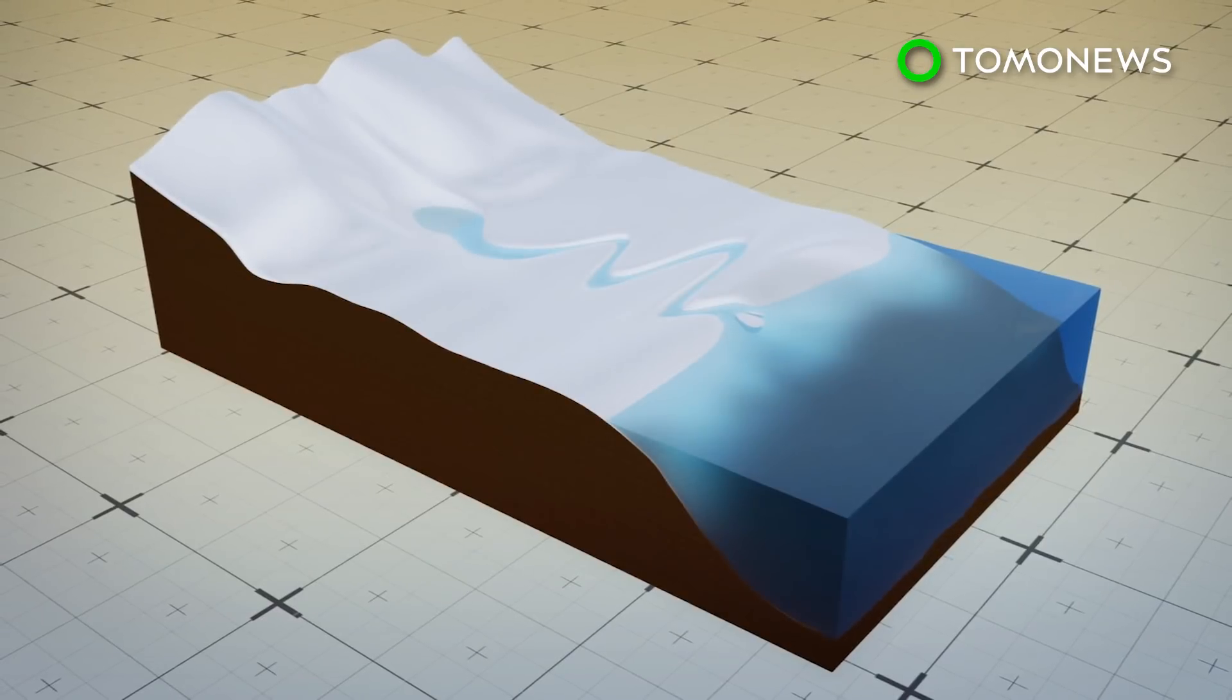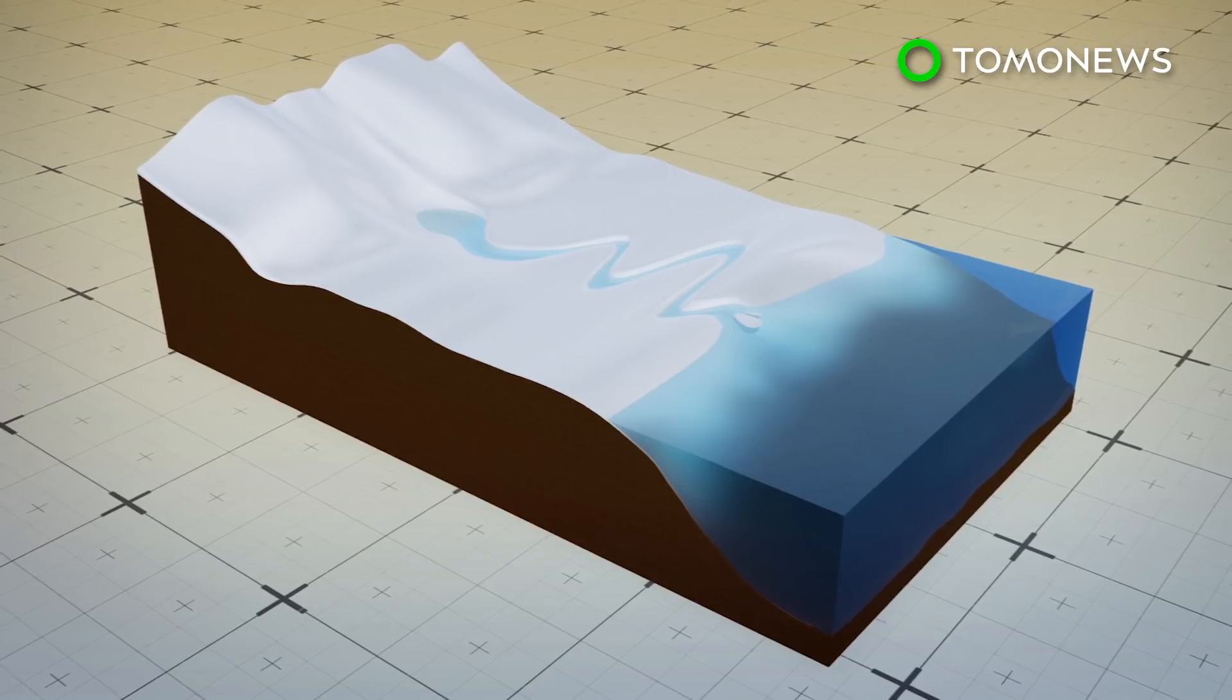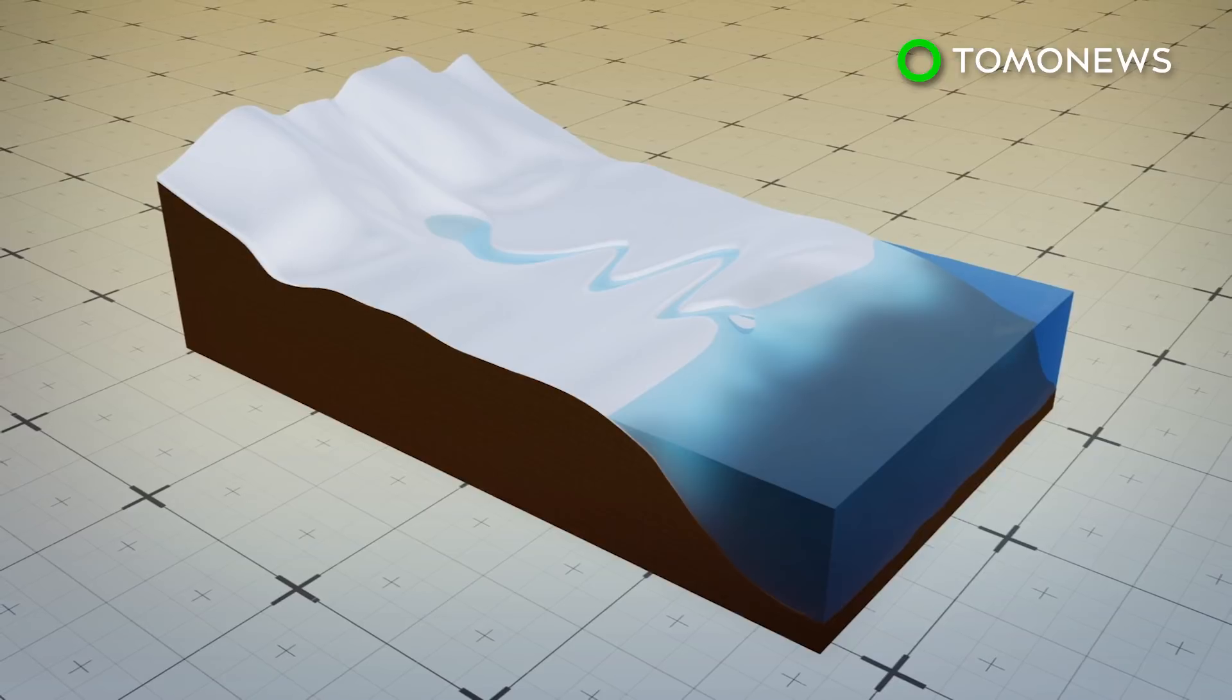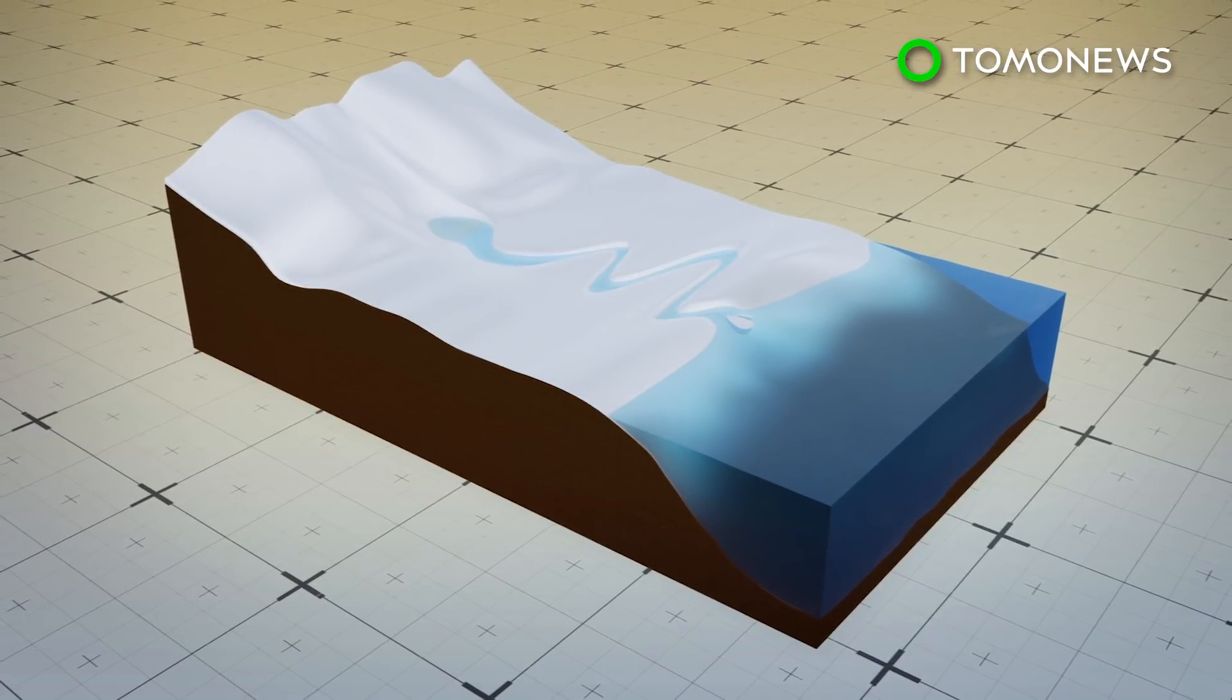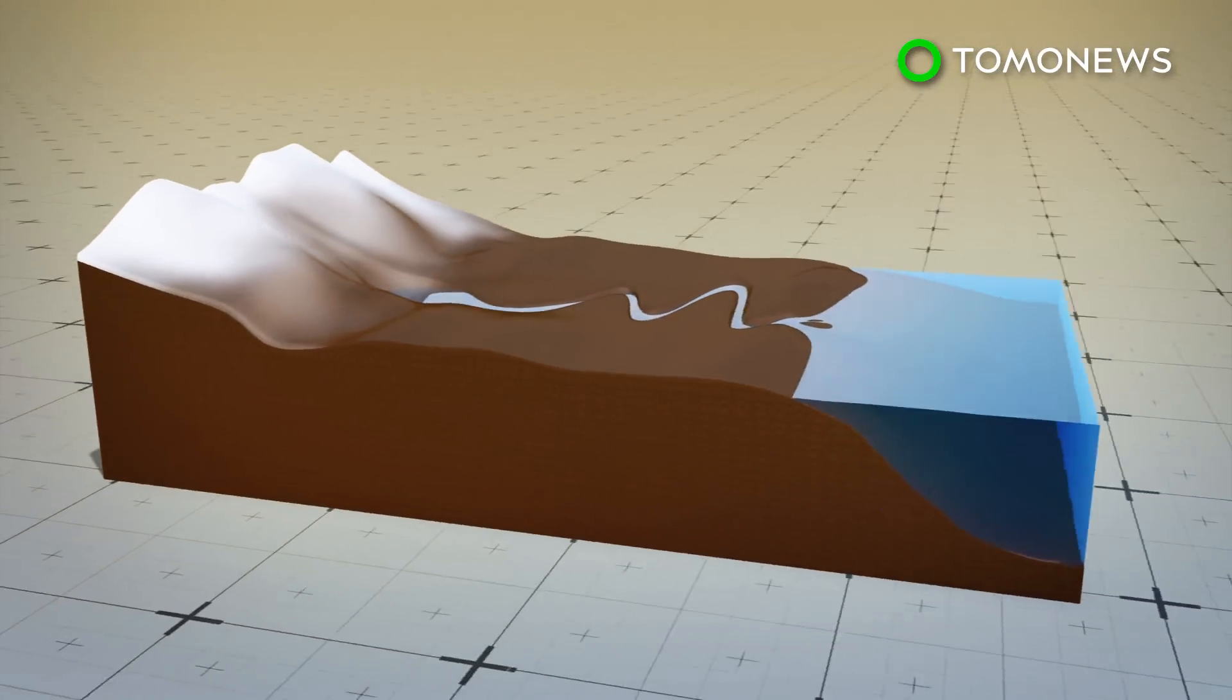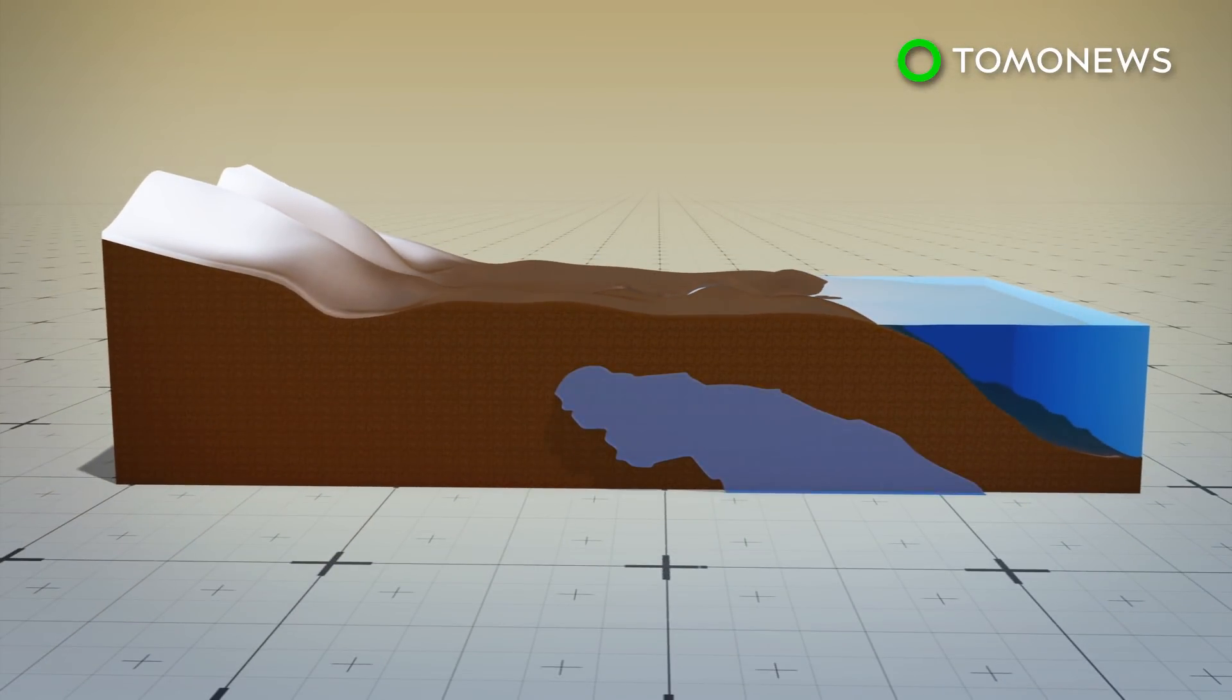Researchers theorize that toward the end of the last ice age some 15 to 20,000 years ago, the world's water was locked in ice. Much of what is now the underwater U.S. continental shelf was exposed due to lower sea levels. When the ice melted, sediments formed river deltas over the shelf which trapped freshwater in scattered pockets.